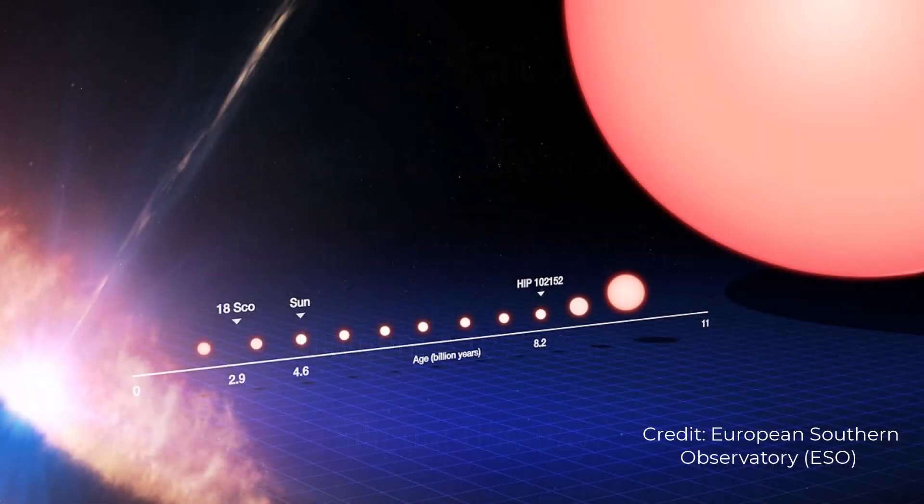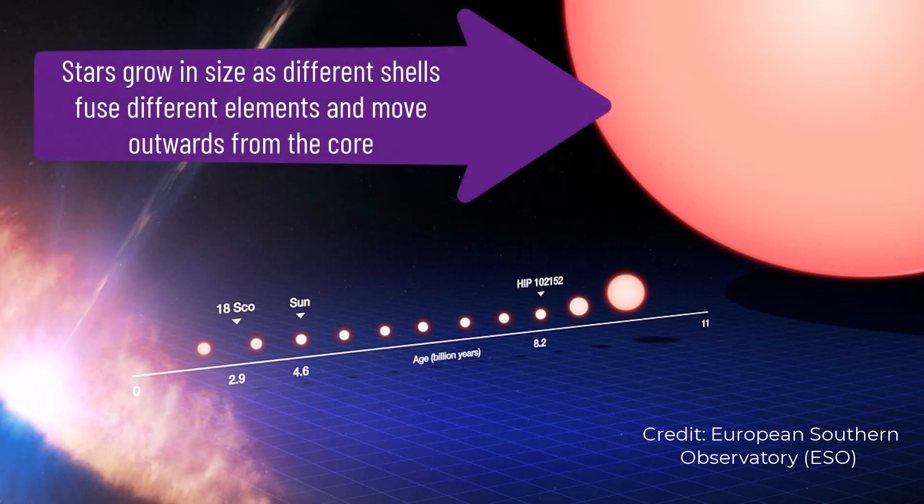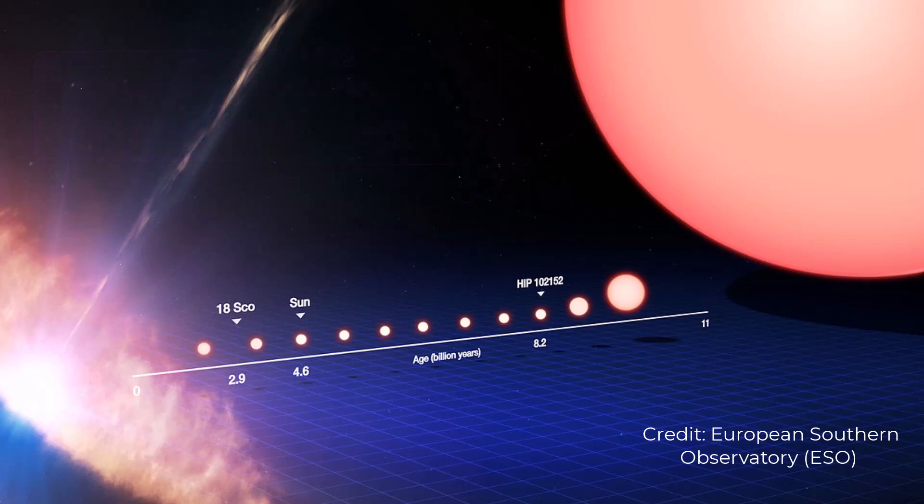Stars will also puff up and expand when they begin to die, and grow up to many times their size. Our own sun is about halfway through its life cycle, but when it swells up it will engulf the earth. This is known as the red giant phase.